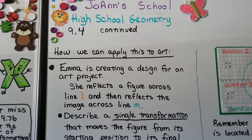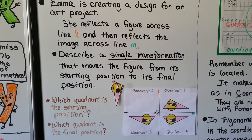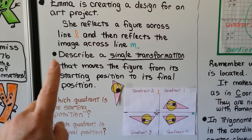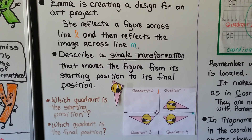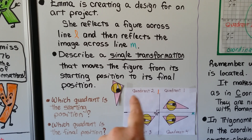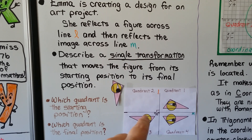How can we apply this to art? Emma is creating a design for an art project. She reflects a figure across line L and then reflects the image across line M — so she's doing two reflections. We need to describe a single transformation that moves the figure from its starting position to its final position. The figure must have started in quadrant 3 and ended in quadrant 1.